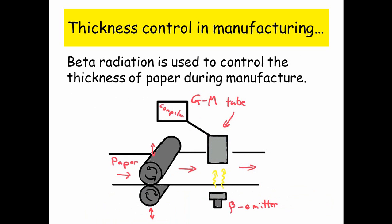Thickness control in manufacturing: beta radiation is used to control the thickness of paper during paper manufacture. How this works is the paper goes through a set of rollers that can go up and down and control the thickness. Then there's a beta emitter, and the beta emitter emits the radiation through the paper to a GM tube. There's a computer that's constantly reading the amount of radiation that gets through.